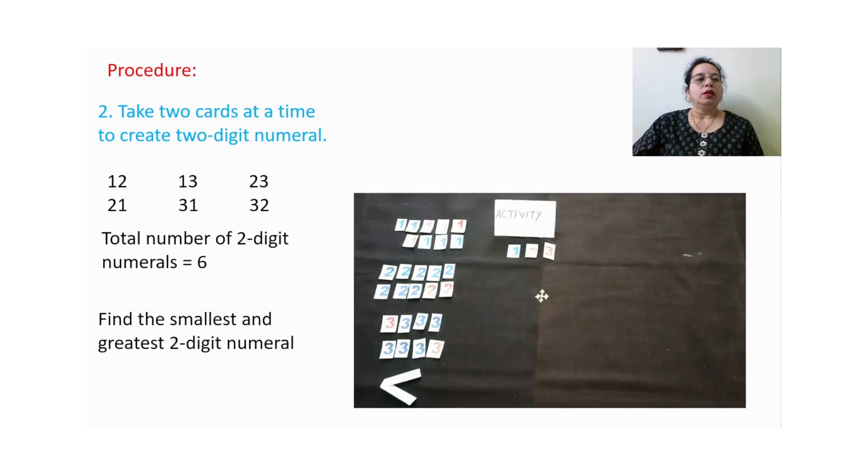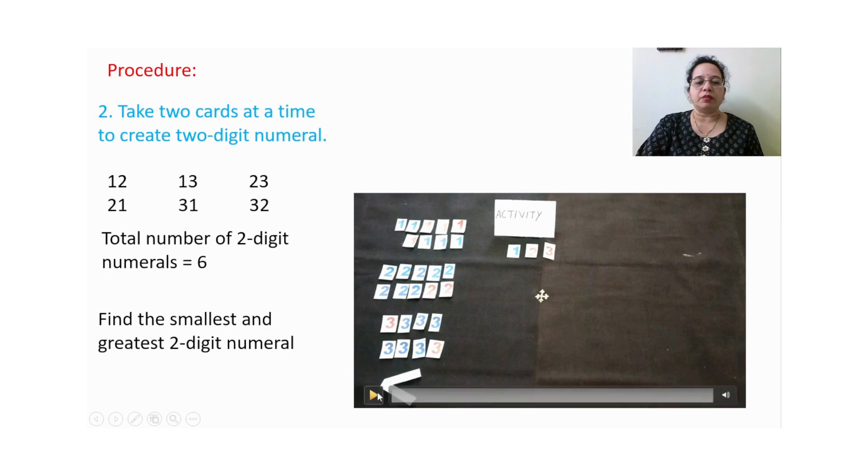Now second time we need to choose any two digits together at a time. So one and two, two and one. We will just change the order: one three, three one, two three, and three two. So this way we will get total number of two digit numerals will be six and you can find out which one is greatest and which one is smallest. So let us do activity for the second part.